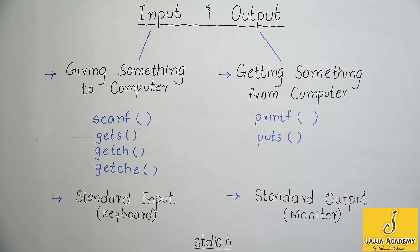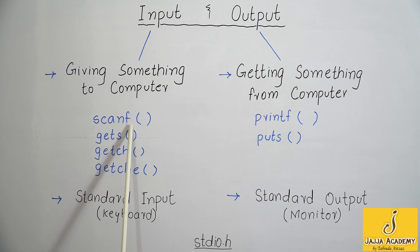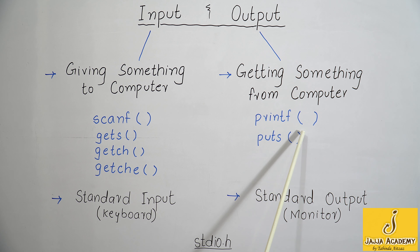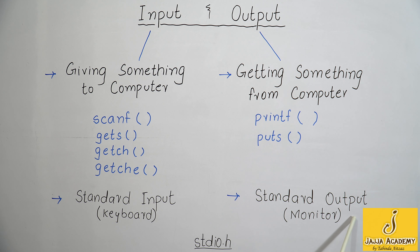Let's see what is meant by input and output. Input is the process of giving something to the computer, and output is the process of getting something from the computer. C language provides many functions to give input and to take output. For example, input functions in C language are the scanf function, gets function, and getc function. The output functions used in C language are the printf function and puts function. The standard input means input taken by using the keyboard, and standard output means showing the output on the screen of the monitor.